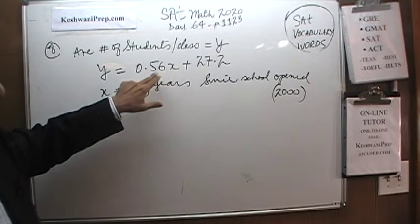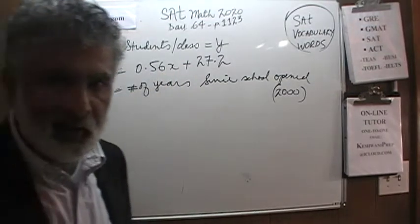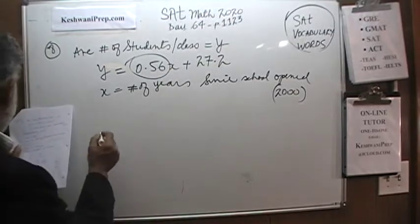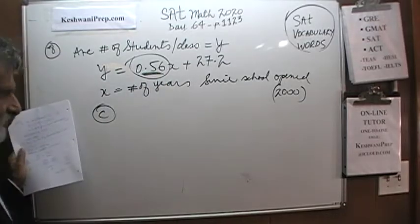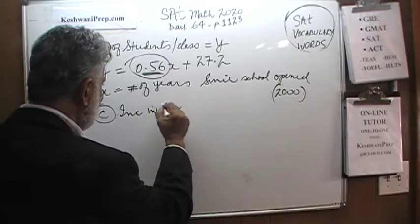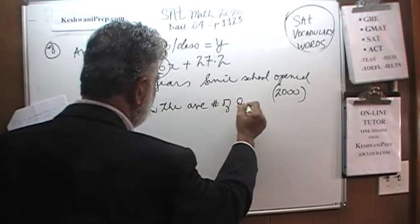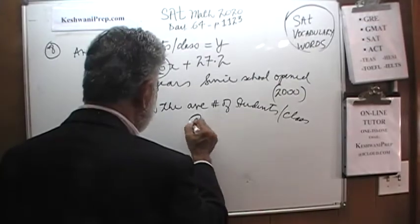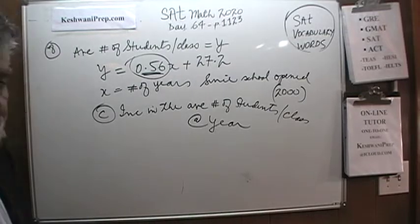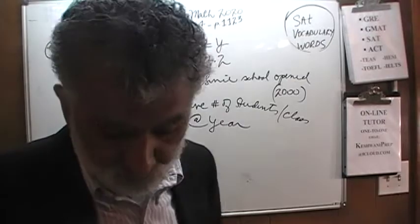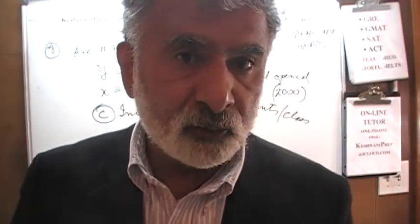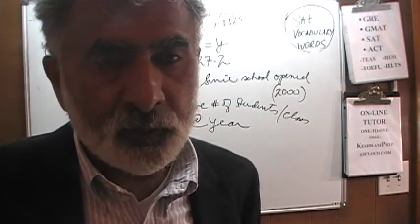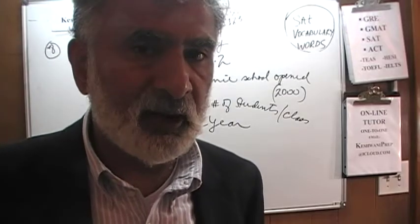What this relationship tells us is that when x is zero, that's the year that the school opened. When x is zero we had approximately 27 students per classroom. At that time when we opened the school, 27 students per classroom, and since then every year it goes up by about 0.56. Each year the average number of students in the class goes up by about 0.56. And that is answer choice C. The question was what does this 0.56 represent? The answer is 0.56 represents the increase in the average number of students per class each year. Of course we cannot have an increase of 0.5, very difficult to find half a kid. What that means is that on average, every two years the average number of students in the classroom goes up by one.